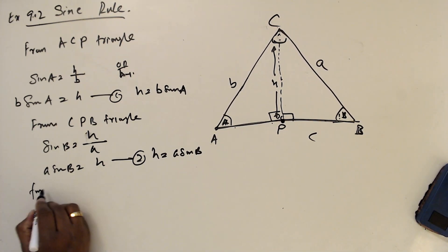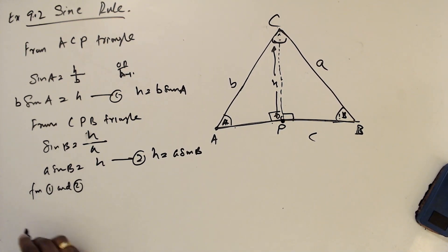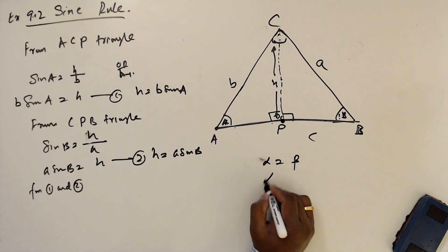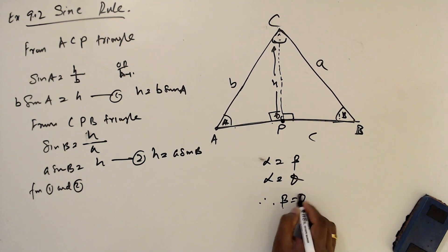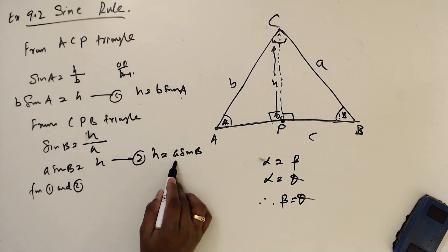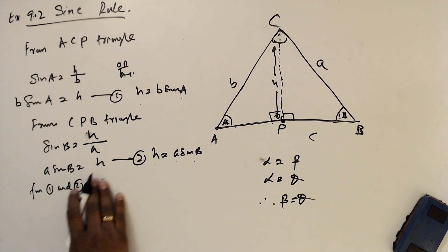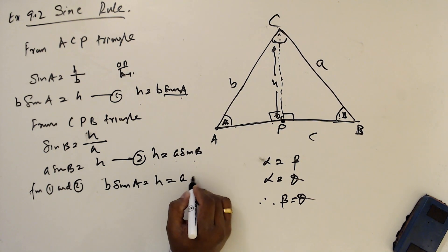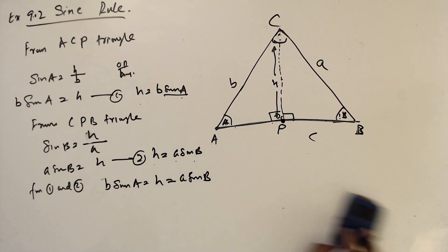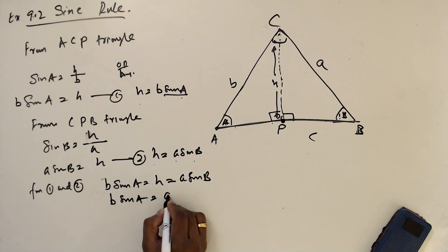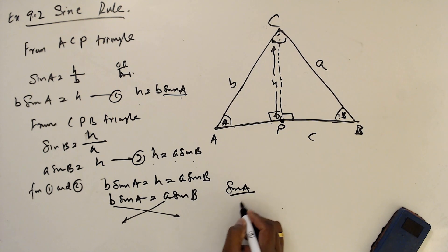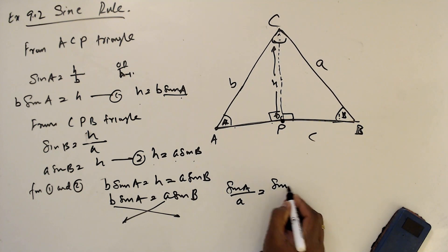From equations 1 and 2: H equals b sine A, and H equals a sine B. Since both equal H, we get b sine A equals a sine B. Now dividing both sides — moving a and b to the denominators — gives sine A over a equals sine B over b.